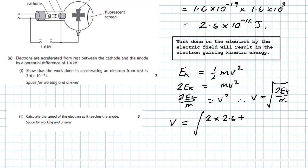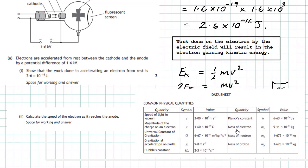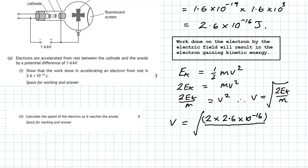2 times 2.6 times 10 to the minus 16. We divide that by the mass of the electron. To check that out we go to our data card again. The mass of the electron is equal to 9.11 times 10 to the minus 31.